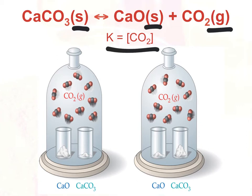Please understand that even though we exclude these solids and liquids from the equilibrium expression, it does not mean that their presence doesn't matter. These reactants or products have to be present in order for equilibrium to occur. It's just that their concentrations don't change, and because we're looking at equilibrium with respect to thermodynamic quantities and activities, we exclude things that are not in the same phase as the gaseous or liquid setups. The equilibrium expression may exclude things that are part of the chemical reaction, but they still need to be present.